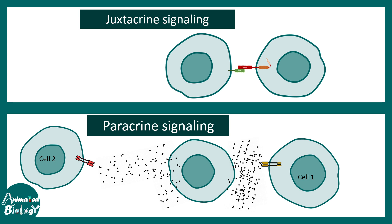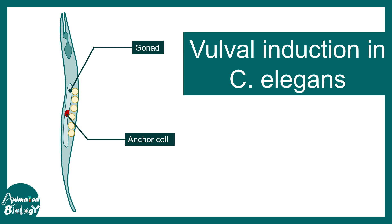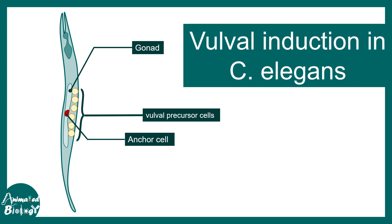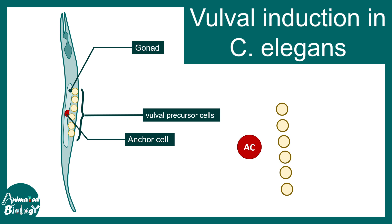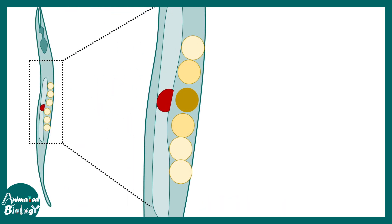These two signaling schemes interact with each other in the vulva development of C. elegans. Here you can see the overall anatomy: there is the gonad, a cell known as the anchor cell, and six vulval precursor cells which would eventually give rise to vulval cells. The anchor cell is working like an inducer and all the vulval precursor cells (VPCs) are known as an equivalence group — meaning they have equal capability or competence to be induced by the anchor cell.